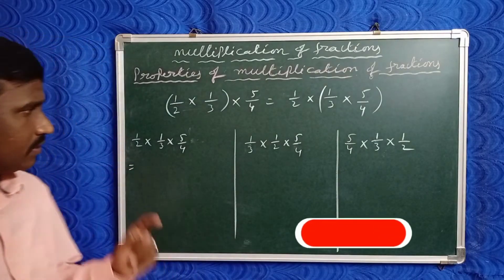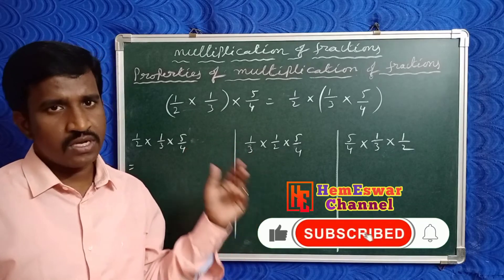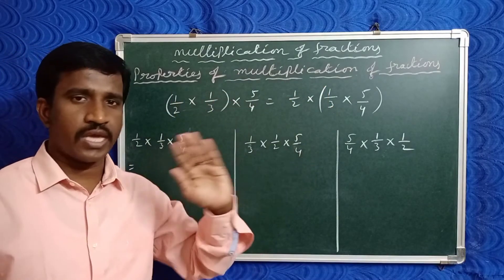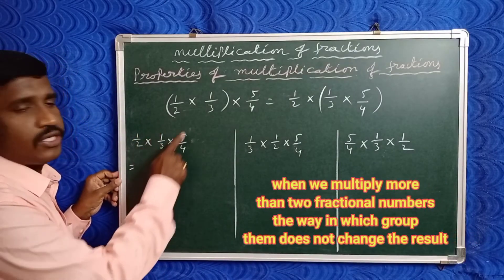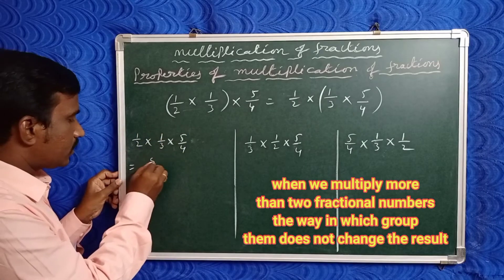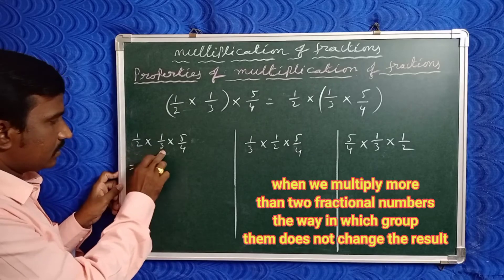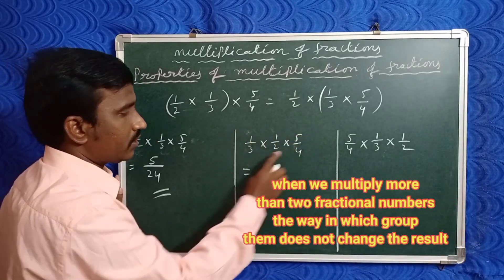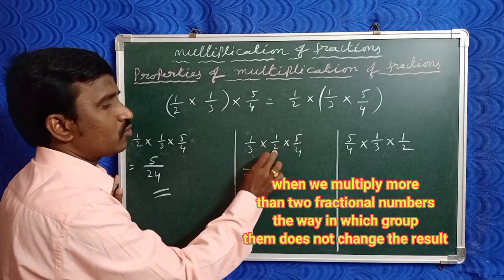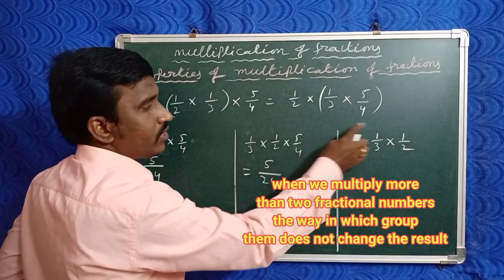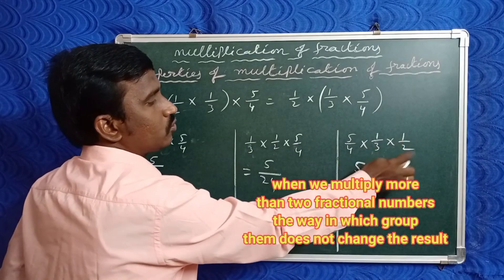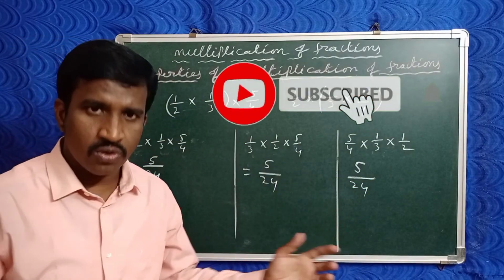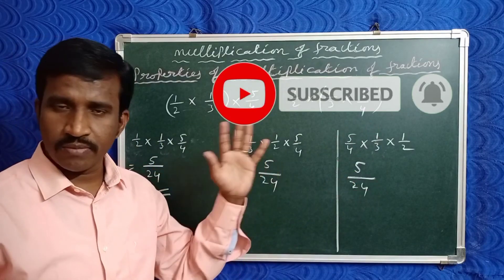Fourth property: with three fractions we also get the same result regardless of grouping order. For example: one by two into one by three into five by four. Multiply all numerators: one into one into five is five. All denominators: two into three into four is twenty-four. Similarly, rearranging as one by three into one by two into five by four: numerators one into one into five is five, denominators three into two into four is twenty-four — again five by twenty-four. So we get the same product regardless of order, demonstrating the associative property.